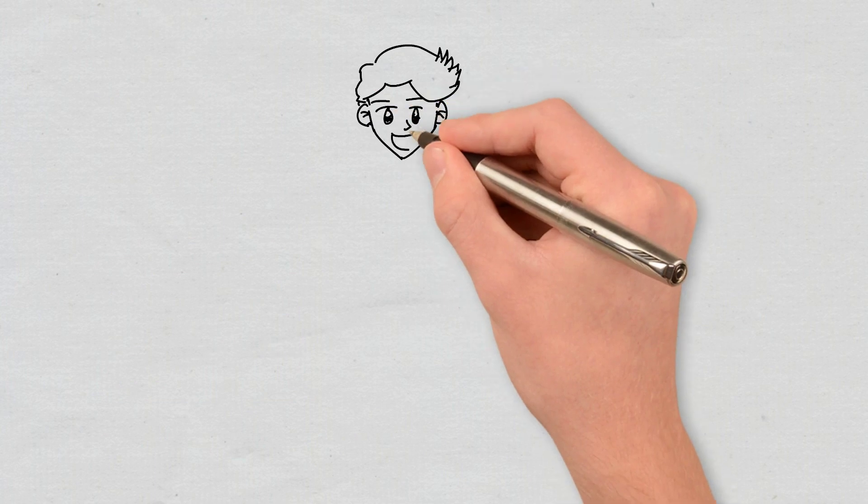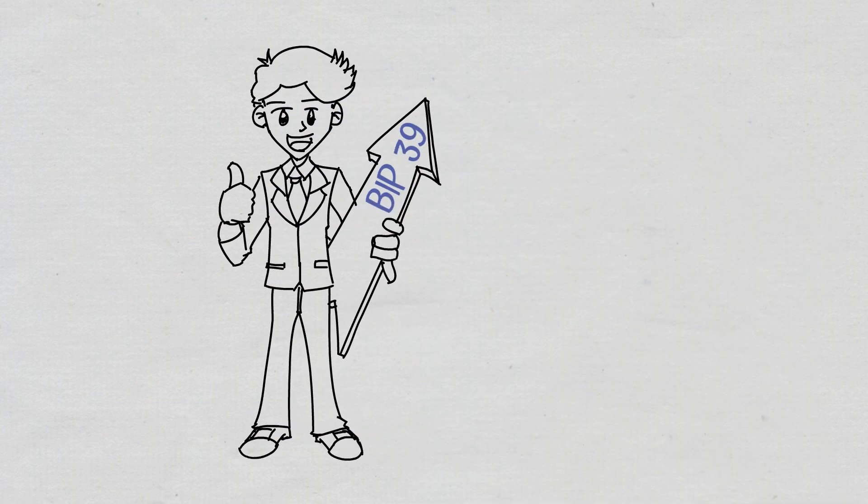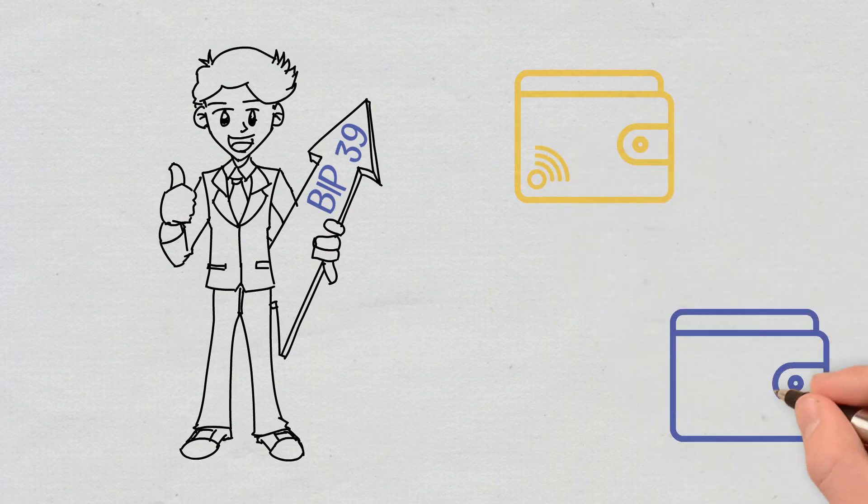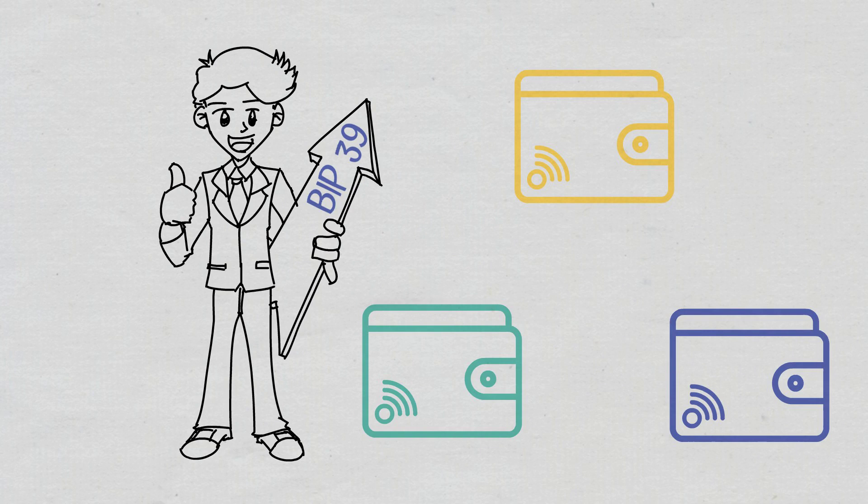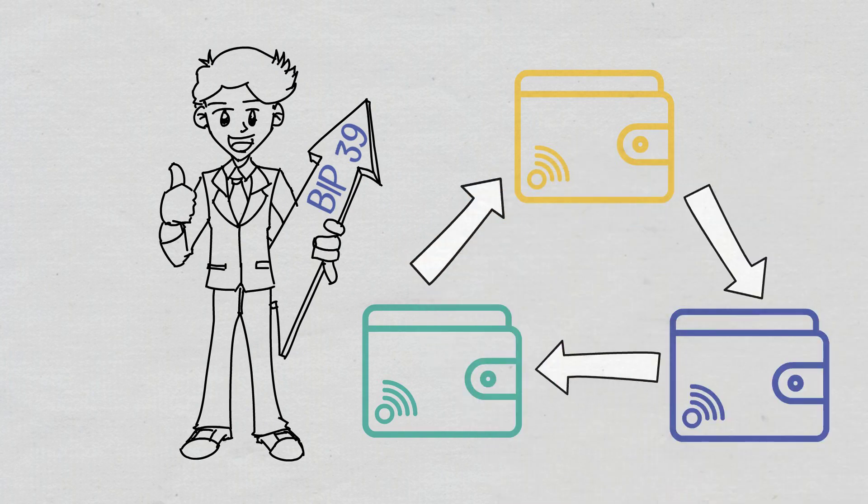One of the greatest advantages of the standard established by the Bitcoin Improvement Proposal 39 is that it makes major wallets mutually compatible. This means that if you want to switch wallets or lose access to your wallet, you can load the seed phrase into a new BIP 39-compatible wallet in order to recover your funds.